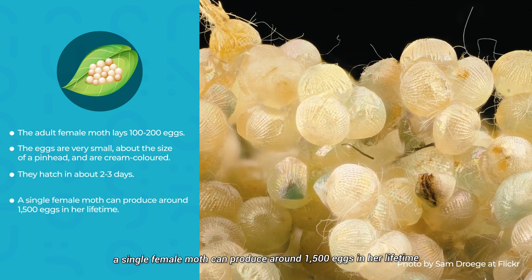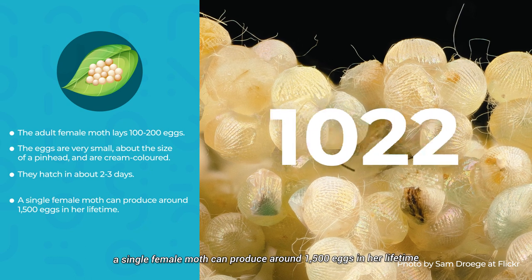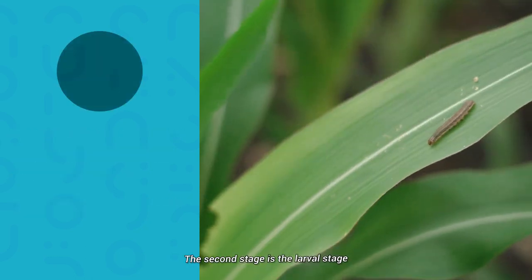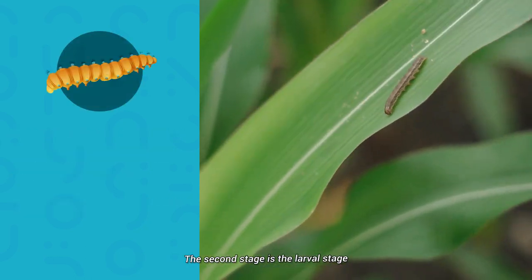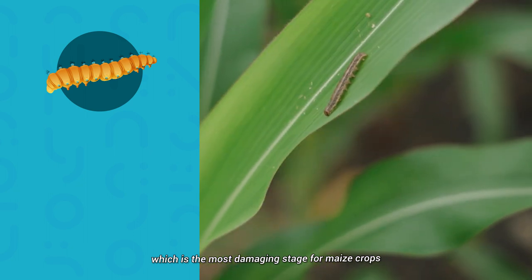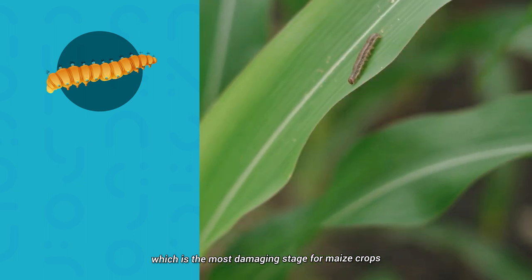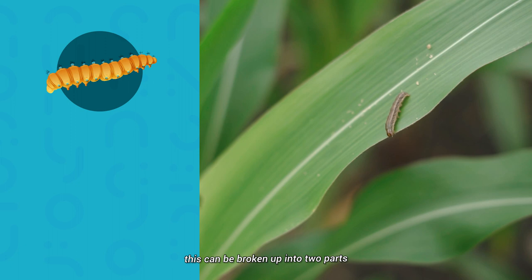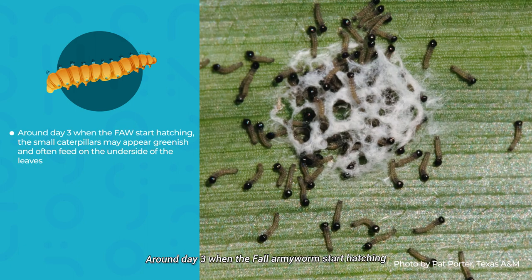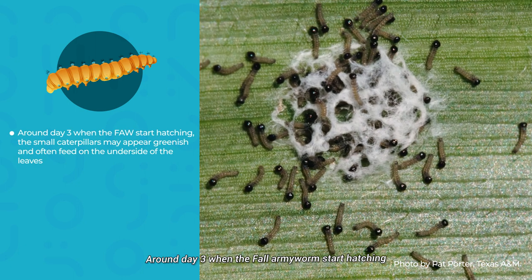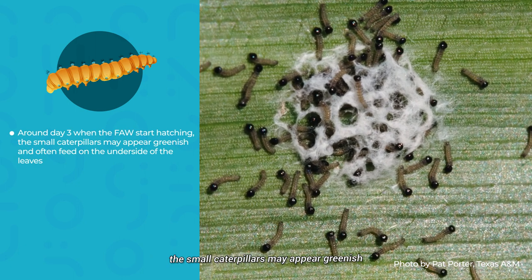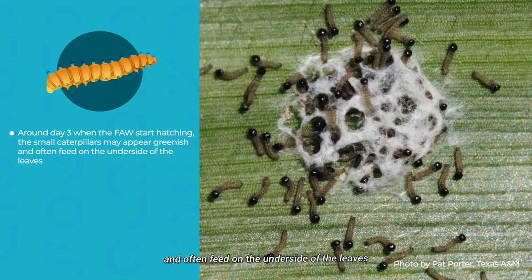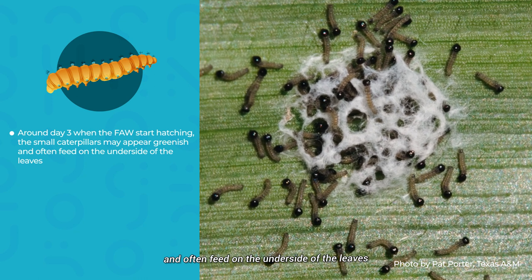A single female moth can produce around 1,500 eggs in her lifetime. The second stage is the larval stage, which is the most damaging stage for the maize crops. Around day 3, when the fall armyworms start hatching, the small caterpillars may appear greenish and often feed on the underside of the leaves.